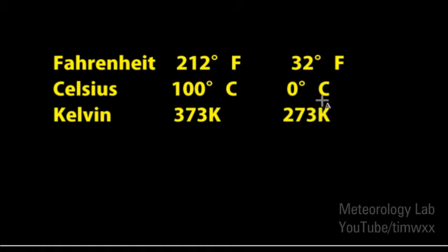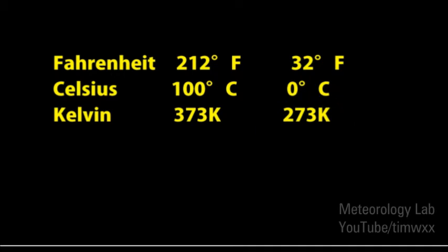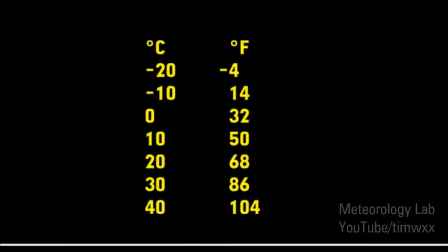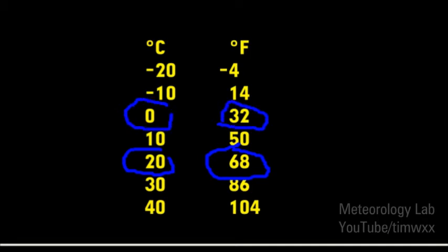Keep the number 273 in mind — that's the freezing temperature in Kelvin, and it makes conversions very simple. For example, 30 degrees Celsius in Kelvin: just add 30 to 273 and we get 303. Here are some very useful conversions: 20 degrees Celsius equals 68 Fahrenheit, and 32 Fahrenheit equals zero Celsius, or 273 Kelvin. Memorize that and it'll help you quite a bit.